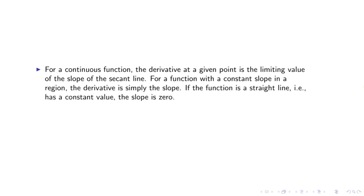For a continuous function, the derivative at a given point is the limiting value of the slope of the secant line. For a function with a constant slope in a region, the derivative is simply the slope. If the function is a straight line, it has a constant value, and the slope is 0.